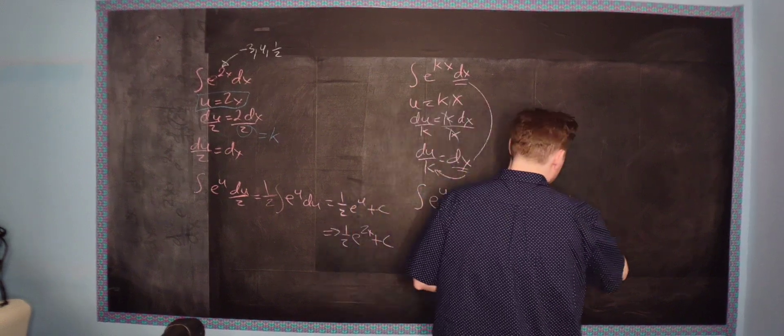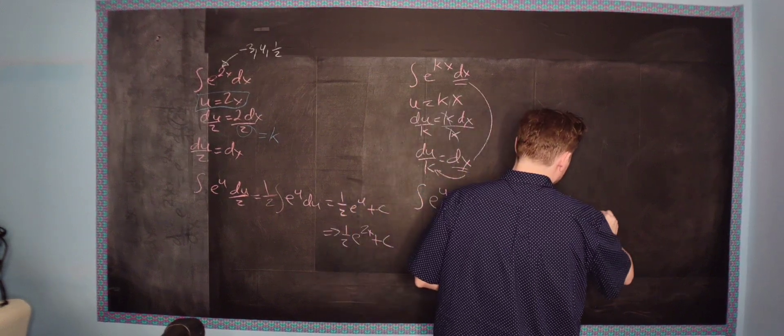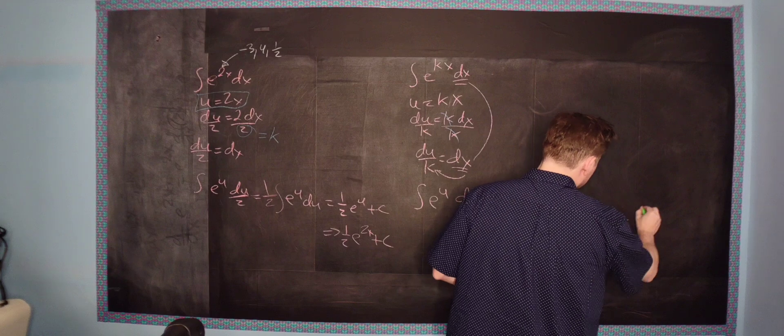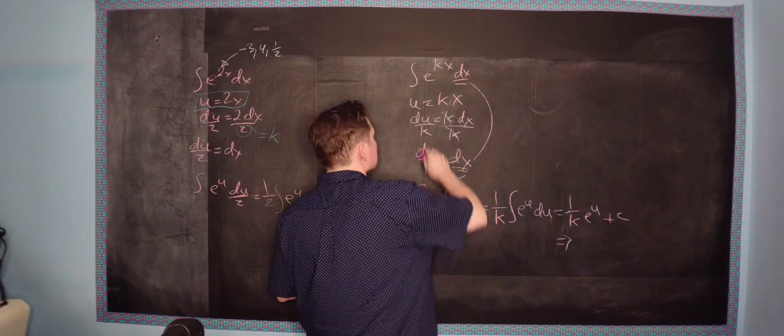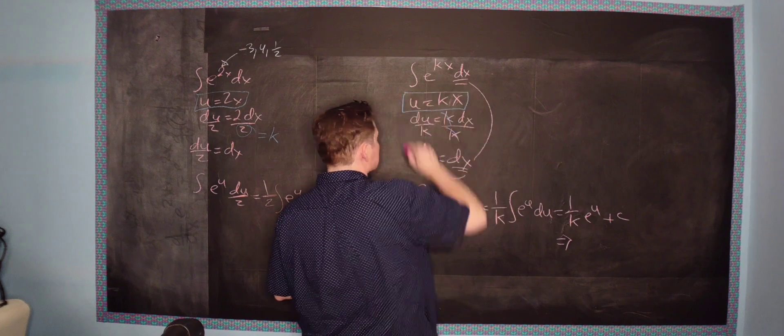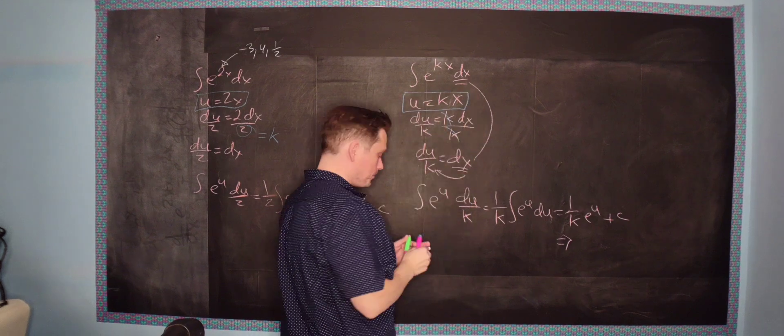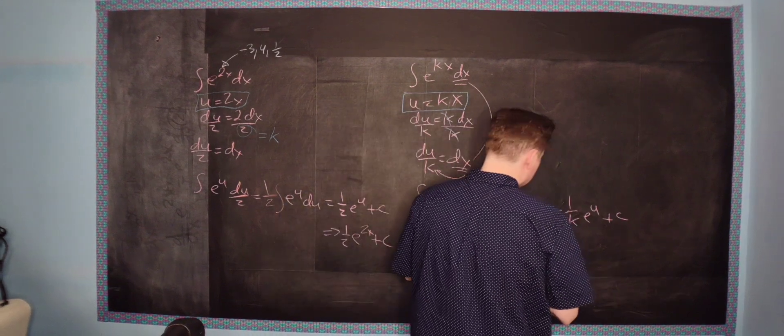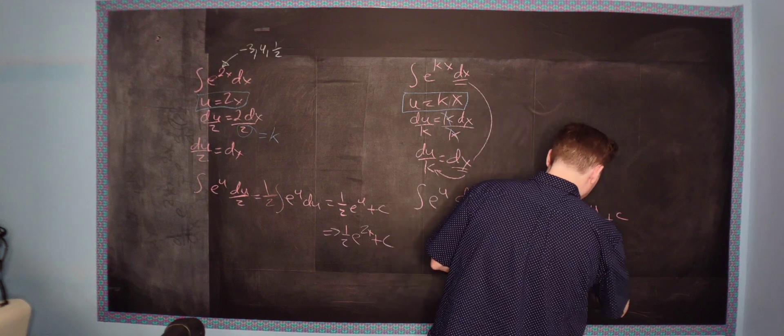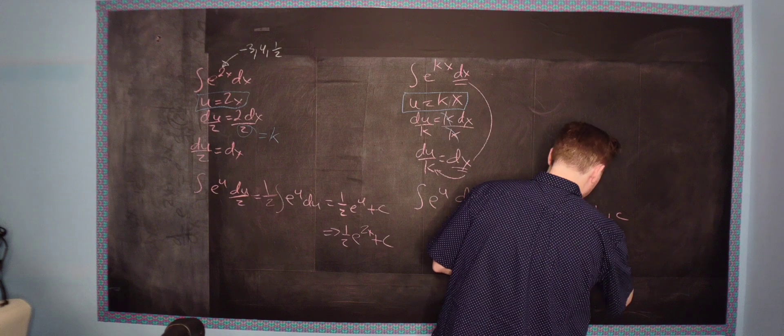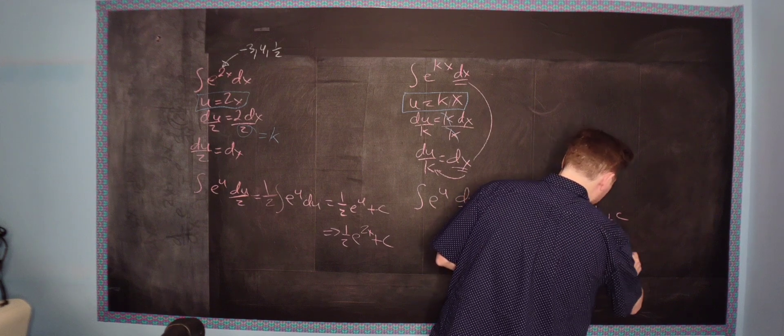So you're going to pull 1 over k out. And then you have the integral of e to the u du. And to anti-differentiate, so it's going to be 1 over k e to the u plus c. But of course, again, let me stress. I use u equal to kx from this step. Therefore, at the very end, we will say that we have the following.